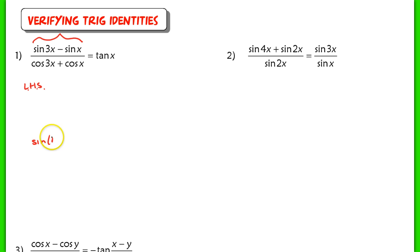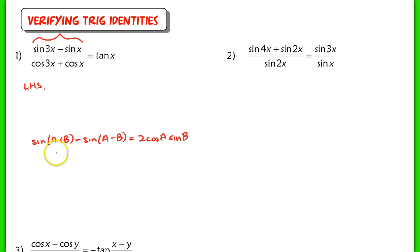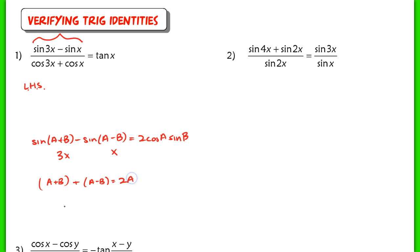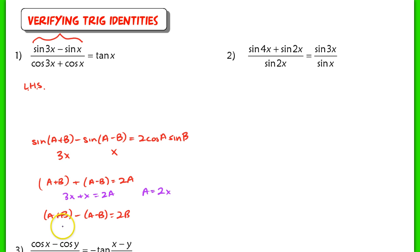We know from our formulas that sine of (a+b) minus sine of (a−b) equals 2·cos(a)·sin(b). Here, a+b = 3x and a−b = x. So a+b plus a−b = 2a, giving us a = 2x. And a+b minus (a−b) = 2b, giving us b = x. So by substitution, sine 3x minus sine x becomes 2·cos(2x)·sin(x).